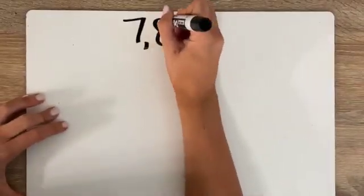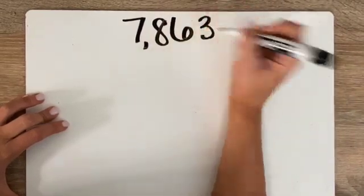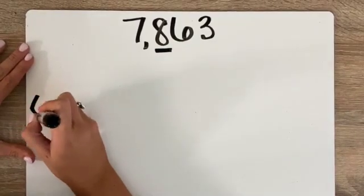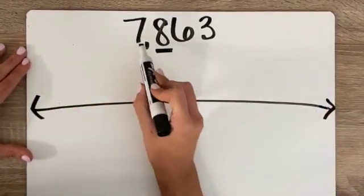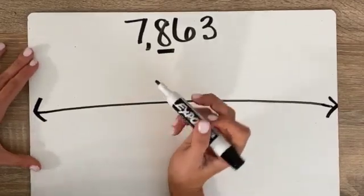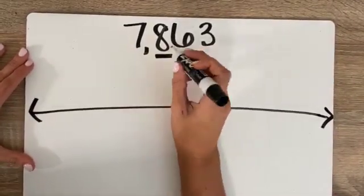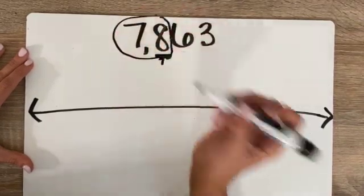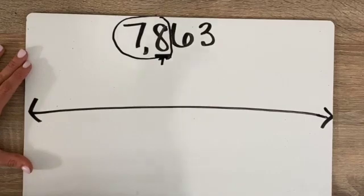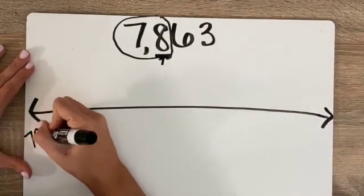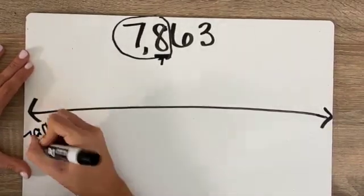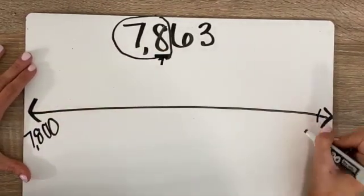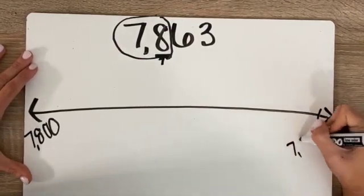7,863 — let's round this to the nearest 100 as well. I think to myself, how many hundreds do I have in 7,863? I look at my hundreds spot and circle the digits. I have 78 hundreds right here, so 78 hundreds would look like 7,800. And then if I had one more 100, that would be 7,900.